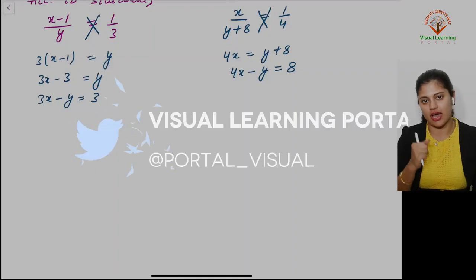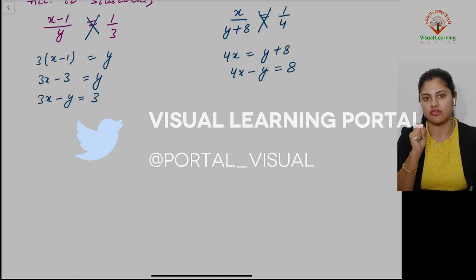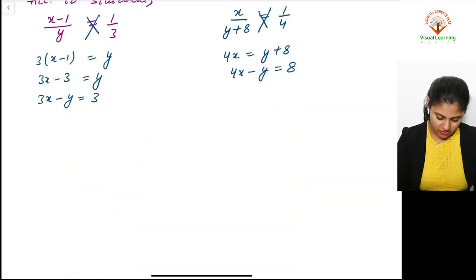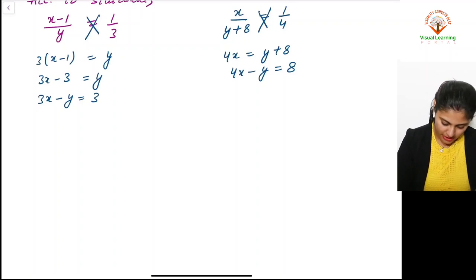Solve by any algebraic method. I prefer elimination; you can use substitution or cross multiplication, whichever is easy. Let this be equation 1 and equation 2. Write both equations: 3x - y = 3 and 4x - y = 8.